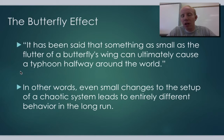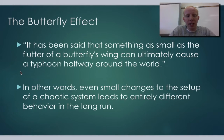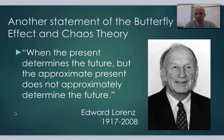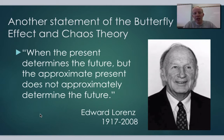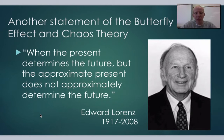Another person who described this really well was Edward Lorenz. He said basically: chaos theory is when the present determines the future, but the approximate present does not approximately determine the future.